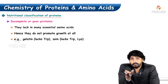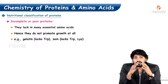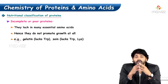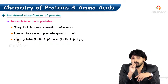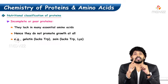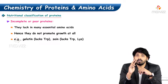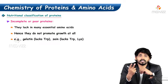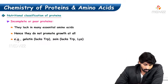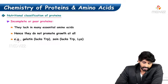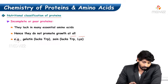Incomplete or poor proteins means any protein present in food that is lacking more than one essential amino acid. If it is missing one essential amino acid, that is partial incomplete; if it is missing more than two essential amino acids, that is incomplete protein. Examples are gelatin, which is lacking tryptophan, and zein from maize, which is lacking tryptophan and lysine.